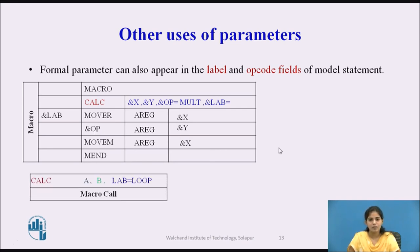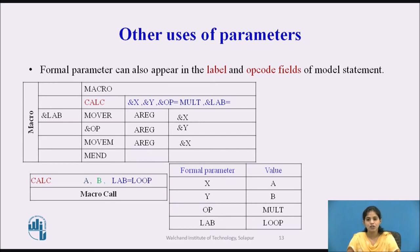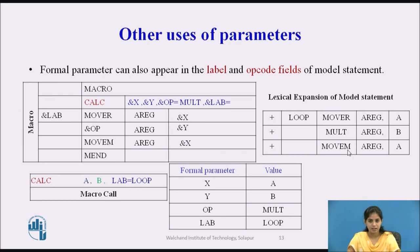The macro call is: CALC A, B, LAB=LOOP. The formal parameter mappings are: X=A, Y=B, OP=MULT (default), LAB=LOOP. The first model statement &LAB MOOR A_REGISTER, &X expands to: LOOP in the label field (since LAB=LOOP), opcode MOOR, operand A_REGISTER, and X expands to A. The second model statement &OP A_REGISTER, &Y expands to: opcode MULT (default value), A_REGISTER, and Y expands to B.